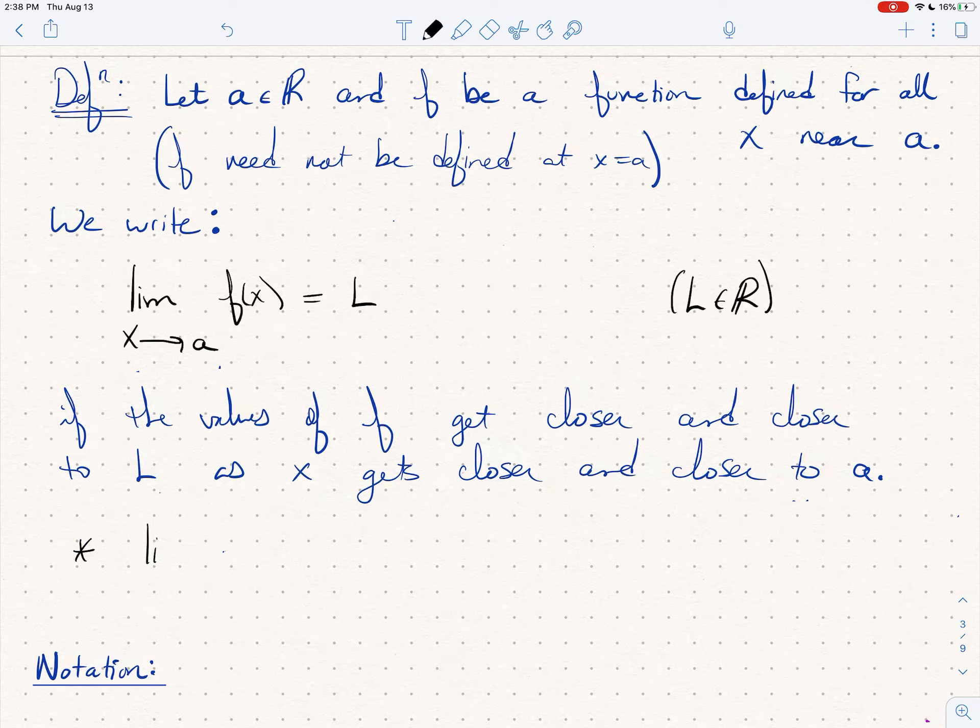And I want to point out to you, this is important: the limit as x goes to a of f(x) might not exist. And in this case we denote this by DNE, does not exist.